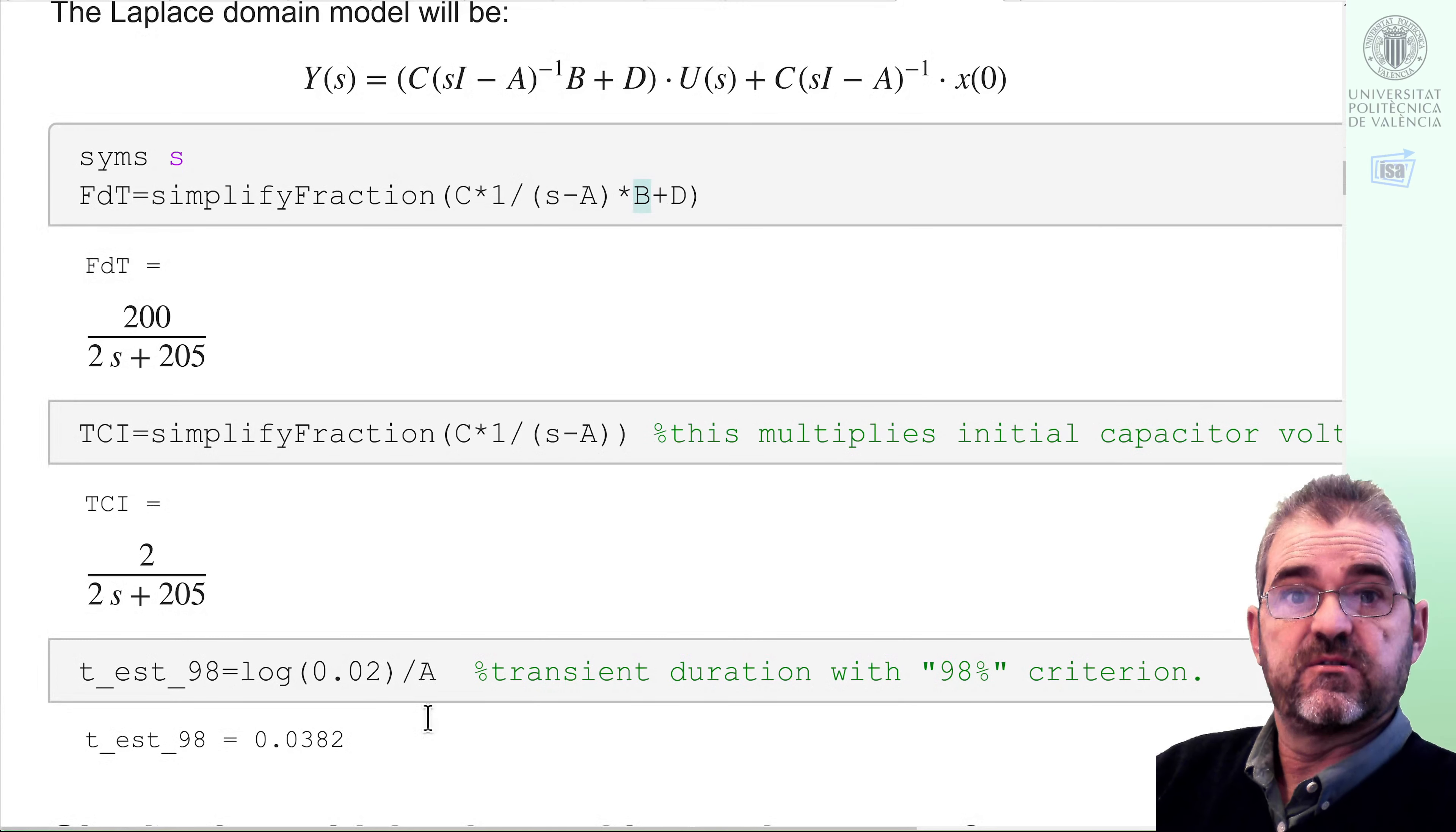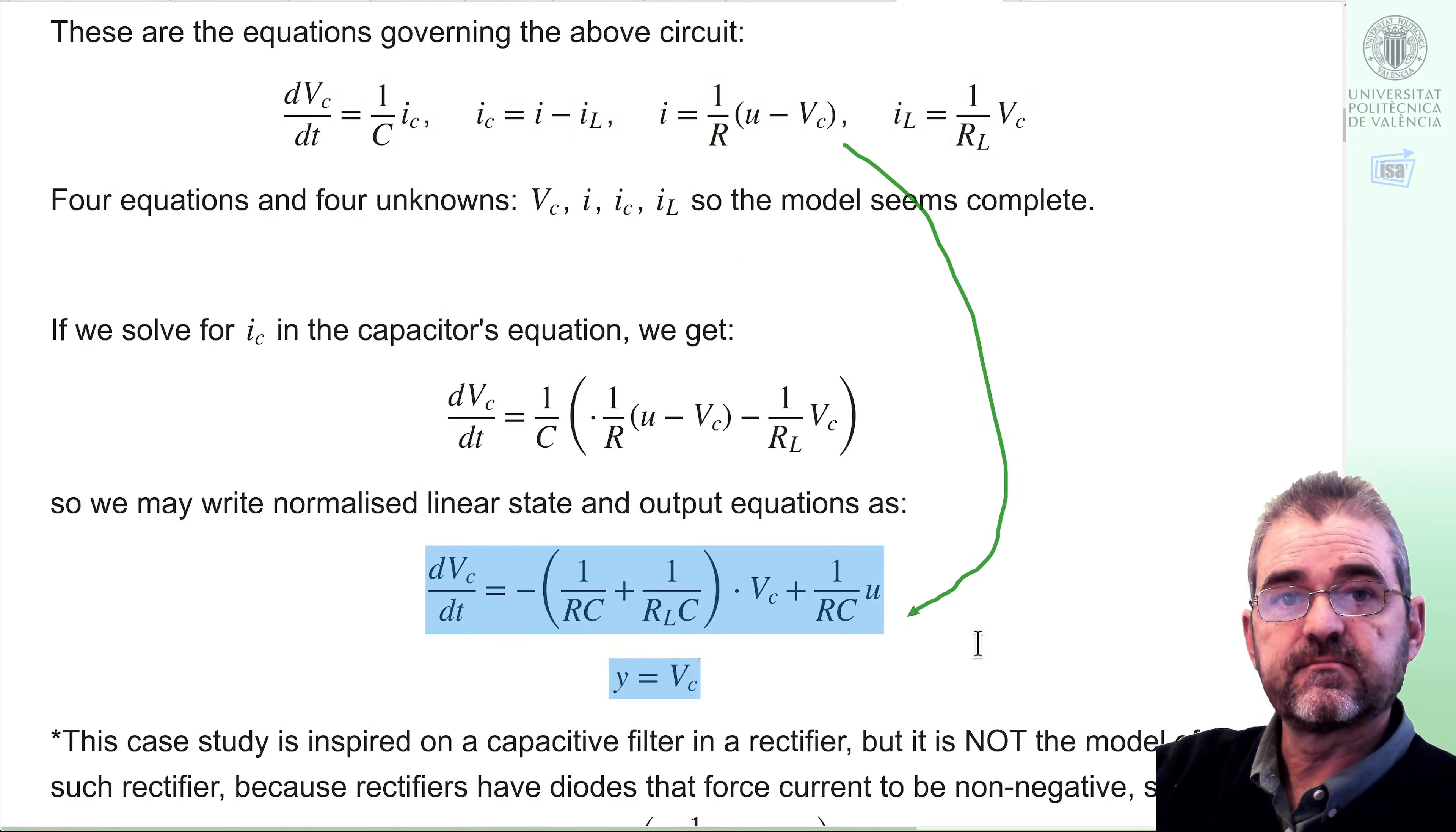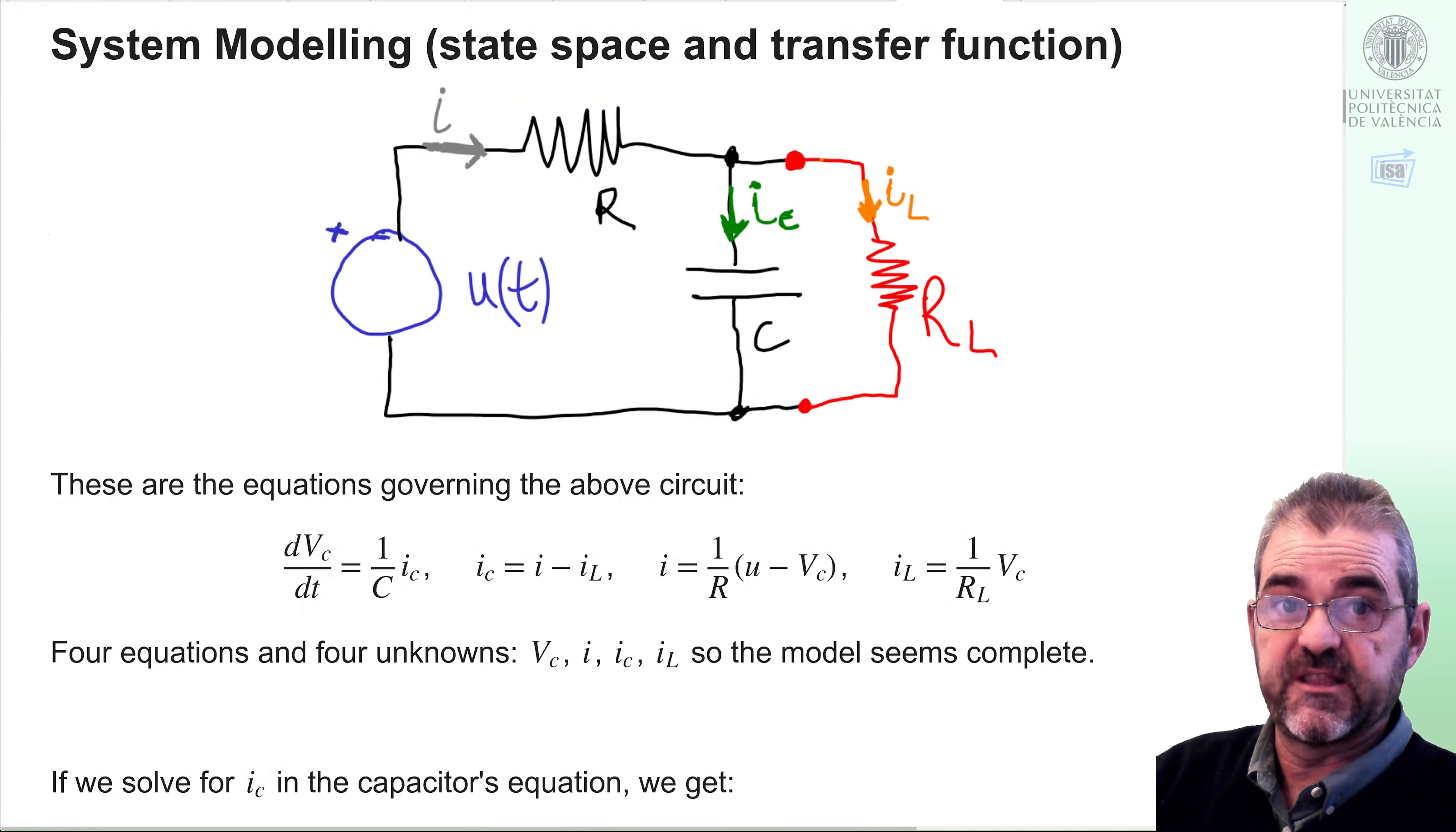Summarizing, in this video, we have modeled this electrical circuit by writing its first principal equations, checking that the module is complete, because we have four equations and four unknowns. Then, we transform the equations to normalized state space form, and we said that the capacitor voltage was our output of interest. And then, we replaced numerical values, and wrote the system in the Laplace domain, as transfer function times input, plus some initial condition related stuff. So, once we have this module, we can use Laplace transform methodologies to obtain its time response, as we will do in future videos. Thanks for watching.